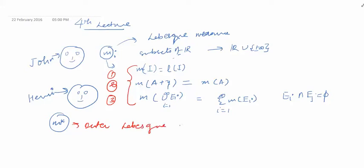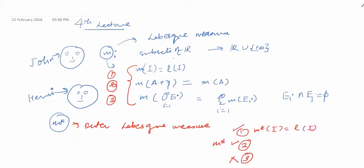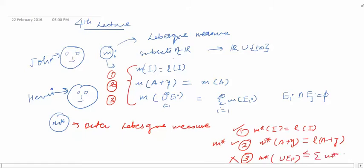In this video, Henry will prove that m* satisfies properties 1 and 2 but not 3. We will prove that m*(I) = l(I) for any interval I of R, and that m*(A+y) = m*(A) (translation invariance). For the third property, we have m* of the union of E_i's is less than or equal to the summation of m*(E_i's), whether the E_i's are disjoint or not. Because m* does not satisfy the third property exactly, we must modify m* to get our m.